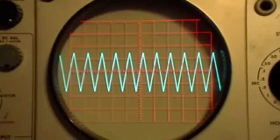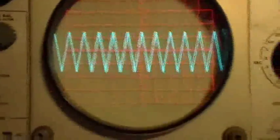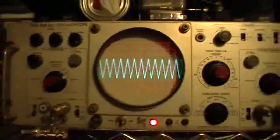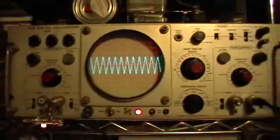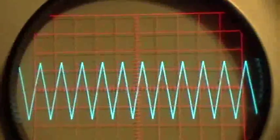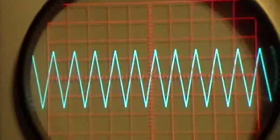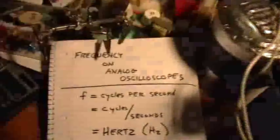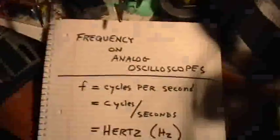This is going to be determining frequency with an analog oscilloscope. That's the beautiful old Tektronix RM503 oscilloscope, and as you can see it's displaying a triangle wave. That triangle wave is coming from an Interstate F43 over there. I'm going to be showing you how to determine frequency using an analog oscilloscope.